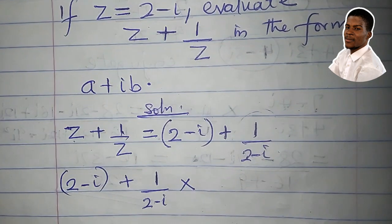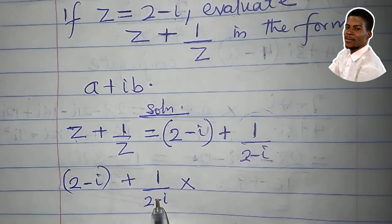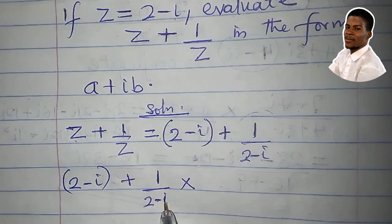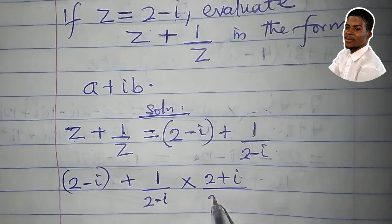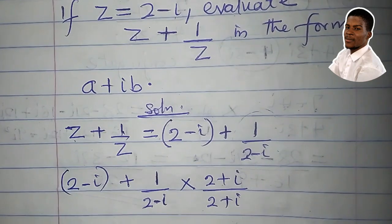That is 2 minus i plus 1 over 2 minus i times the conjugate. Remember what conjugate is. I will have to change the sign of the imaginary part. That will be 2 plus i all over 2 plus i.